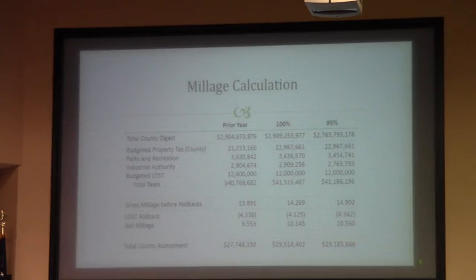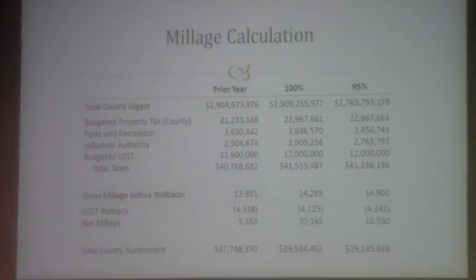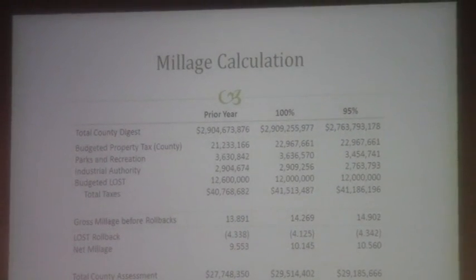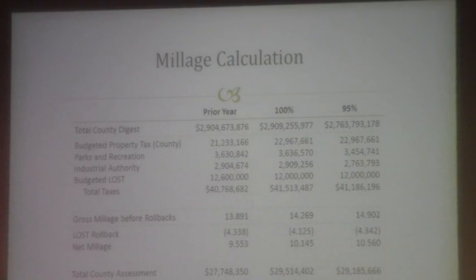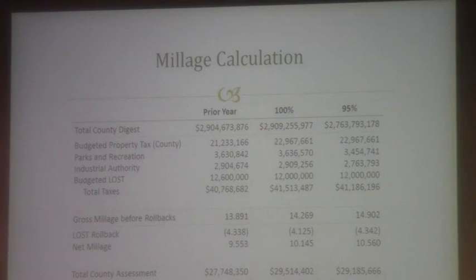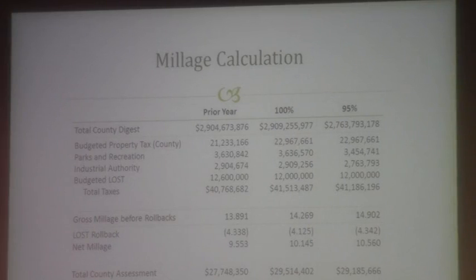Looking at the millage calculation, the prior year is included. At 100%, the digest is $2.9 billion. Your gross millage before rollback is $14.269. With the LOST rollback, that would be 10.145 mils. Generally in the first year there is a 95% collection rate, which is what we use for calculation purposes. So you would have a $2.7 billion digest, $41.1 million in budgeted taxes, or $14.902 gross millage. Once you apply the rollback, that is 10.56 mils.